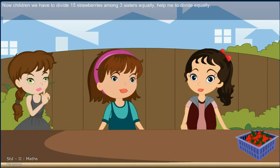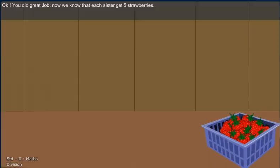Now children, we have to divide 15 strawberries among 3 sisters equally. Help me to divide equally. Ok, you did great job. Now we know that each sister gets 5 strawberries.